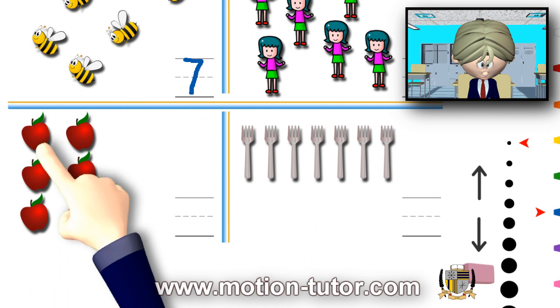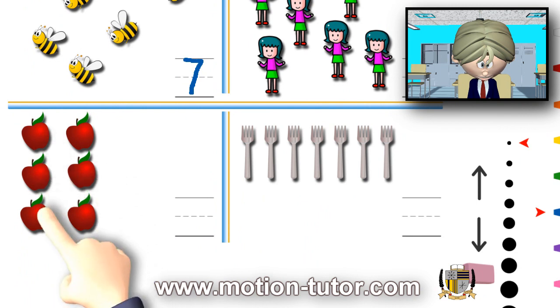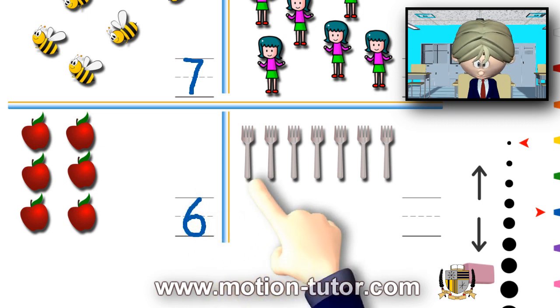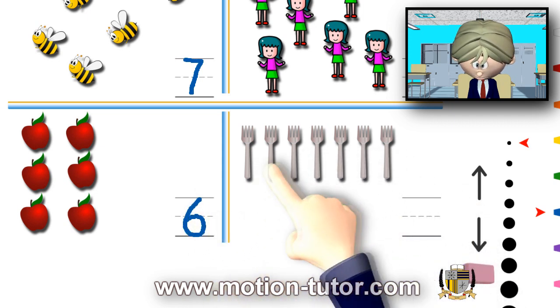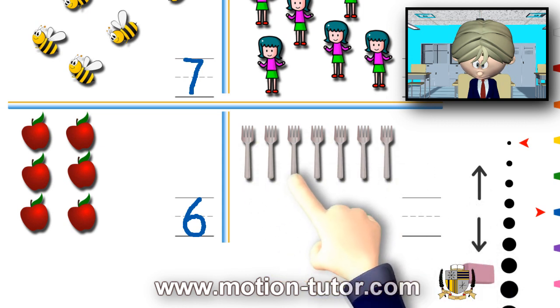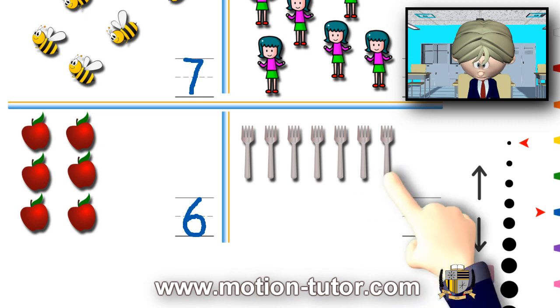The apples, one, two, three, four, five, six. And lastly, these forks, one, two, three, four, five, six, seven.